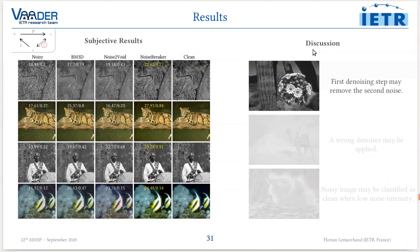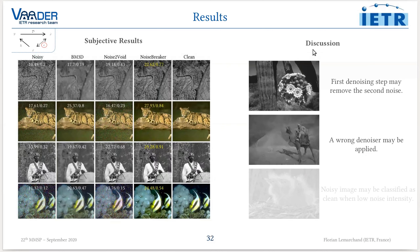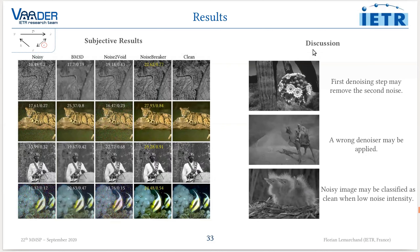Sometimes the gradual denoising does not work as expected. For example, it is possible that the first denoising step may remove the second noise, or that a wrong denoiser may be applied. Also, a noisy image may be classified as a clean image, in which case no denoising is conducted.